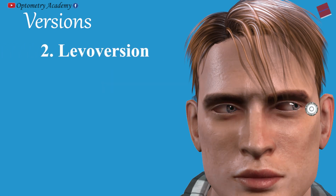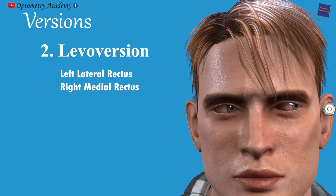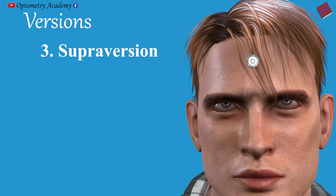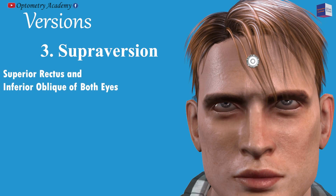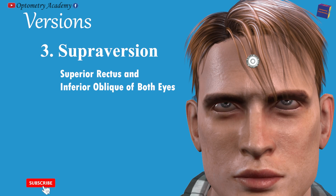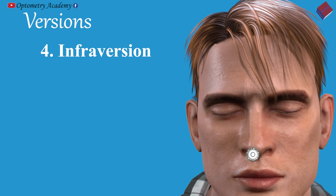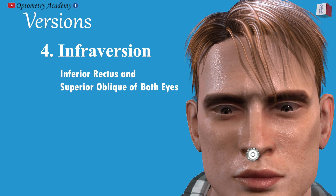Levoversion: when both eyes are turned towards the left, by contraction of the left lateral rectus and right medial rectus. Supraversion: when both eyes are rotated straight up, effected by a simultaneous contraction of the superior rectus and inferior oblique of both eyes. Infraversion: when both eyes are turned straight down, caused by a bilateral contraction of the inferior rectus and superior oblique muscles.